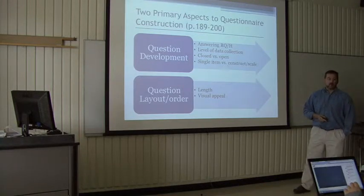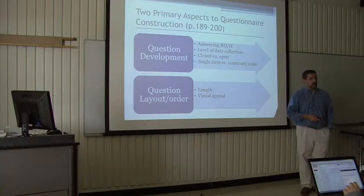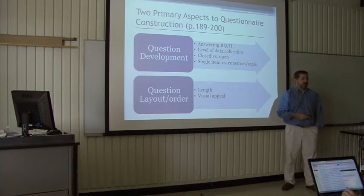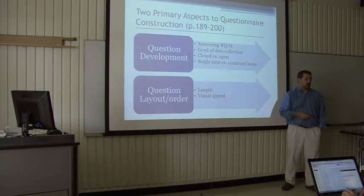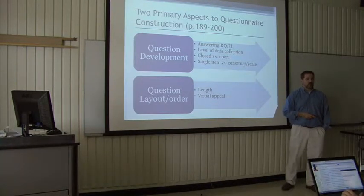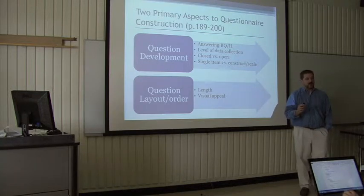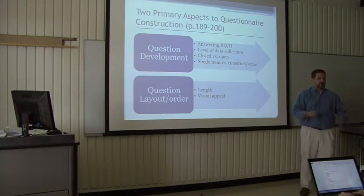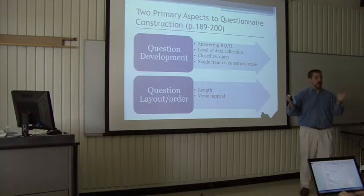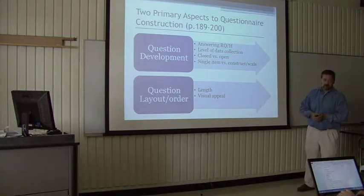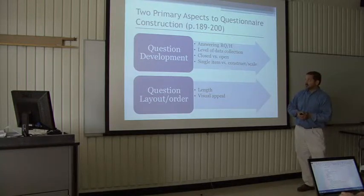You need to think about whether you want to have more open or closed-ended questions. On a survey, what do we want more of? Closed — because it gives you a direct answer. We're looking for a very specific response: yes, no, or on a scale of one to five, where are you? So we can start comparing means. That's where we can start doing more of our inferential statistics.